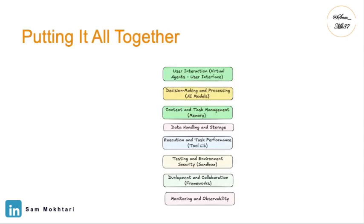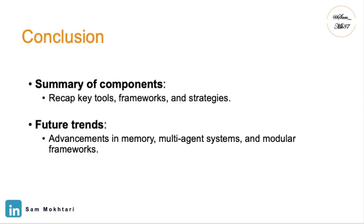Now let's put all these things together. An AI agent stack is like a puzzle — each component fits together to create a powerful, unified system. From selecting the right model to integrating tools, memory, and observability, each step is crucial for building an efficient AI workflow. Make sure to consider scalability for future growth, use modular design for flexibility, and prioritize security for the whole environment. All these components need to work together to create an intelligent, scalable, and efficient system for solving complex tasks.